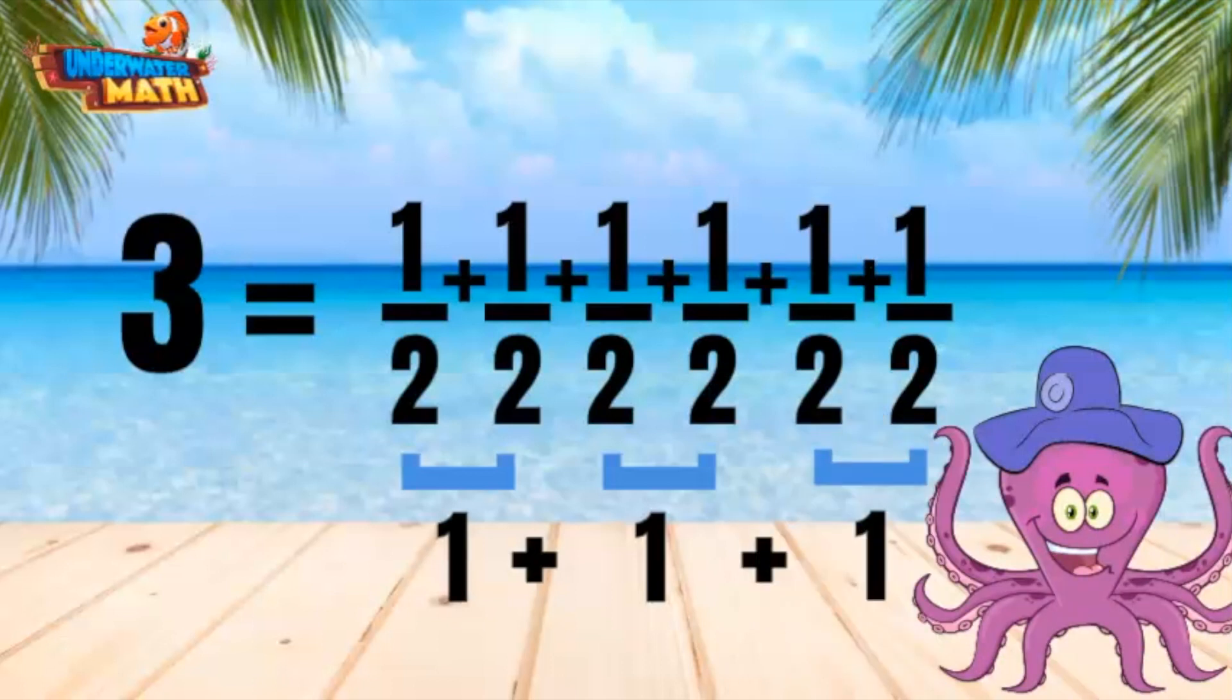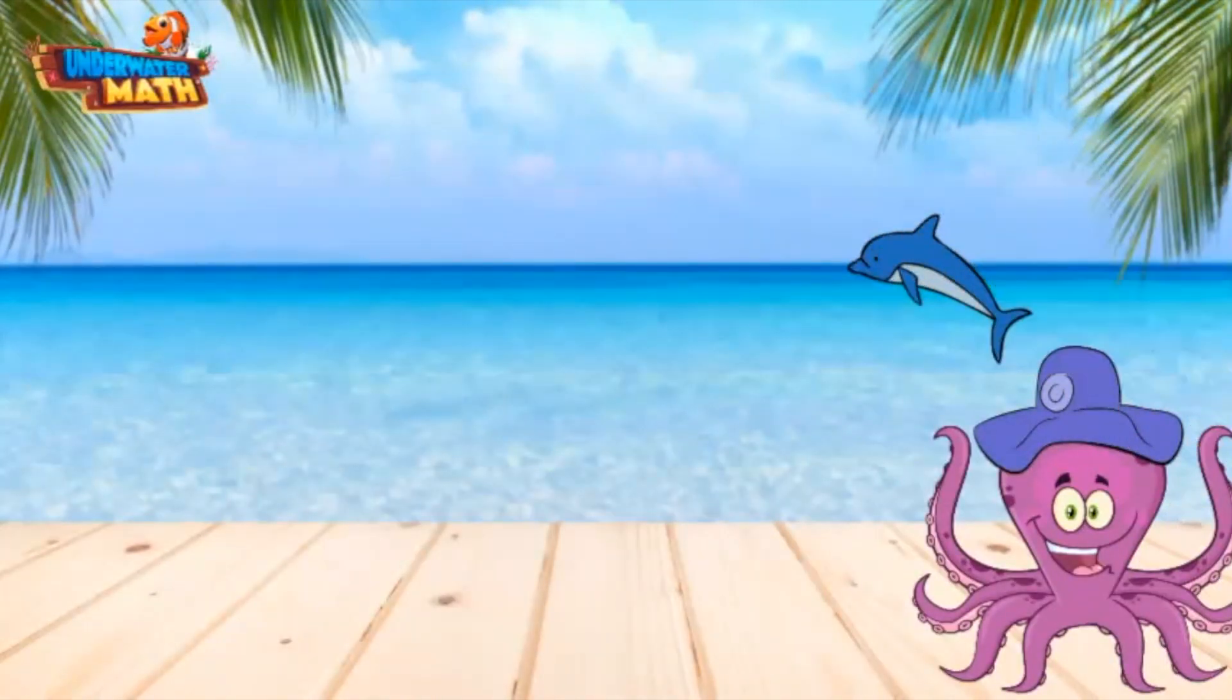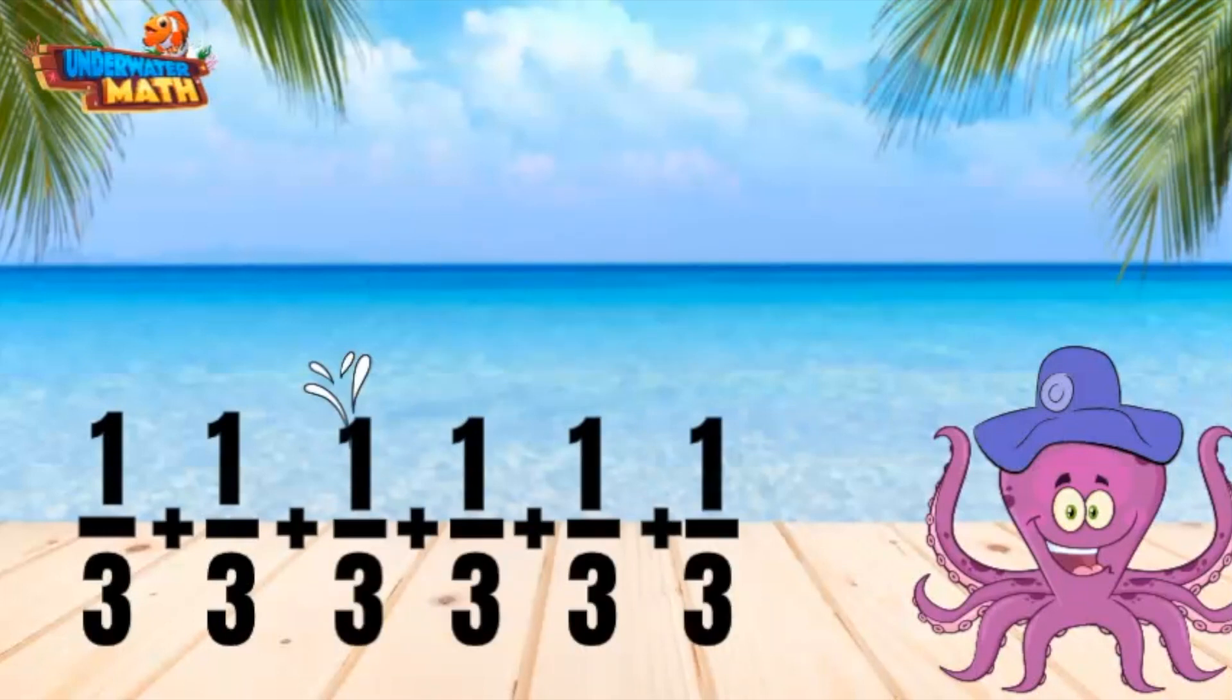My friend Daphne is practicing getting big air. She jumped one-third of a mile out of the ocean every day for six days. We can express her total air as a sum of unit fractions. Three one-thirds make one whole, and another three one-thirds makes another whole.